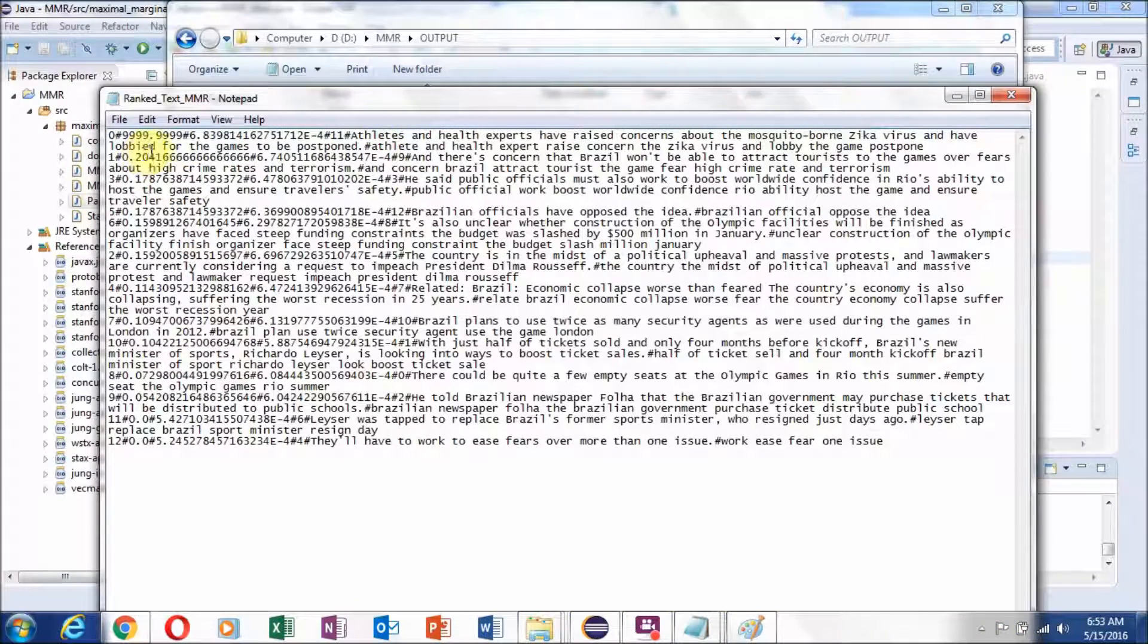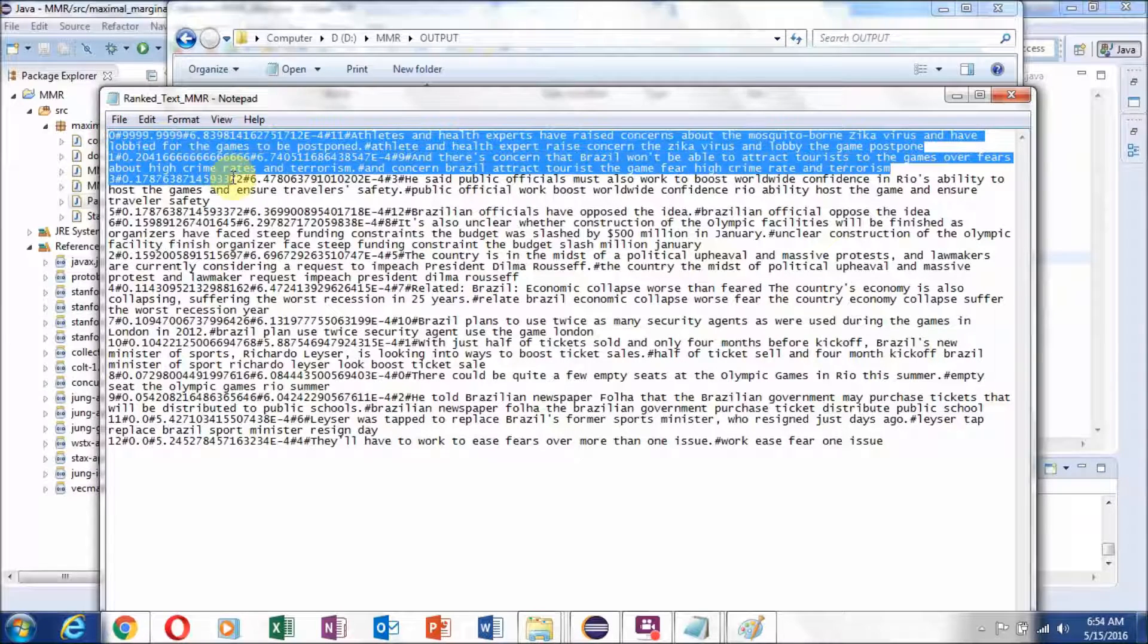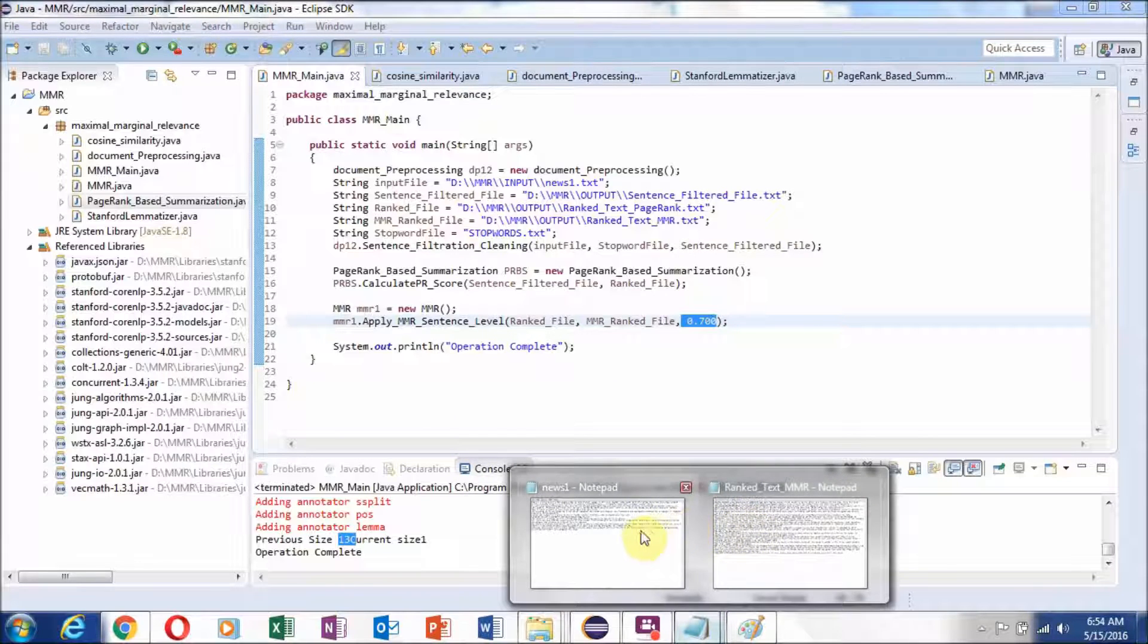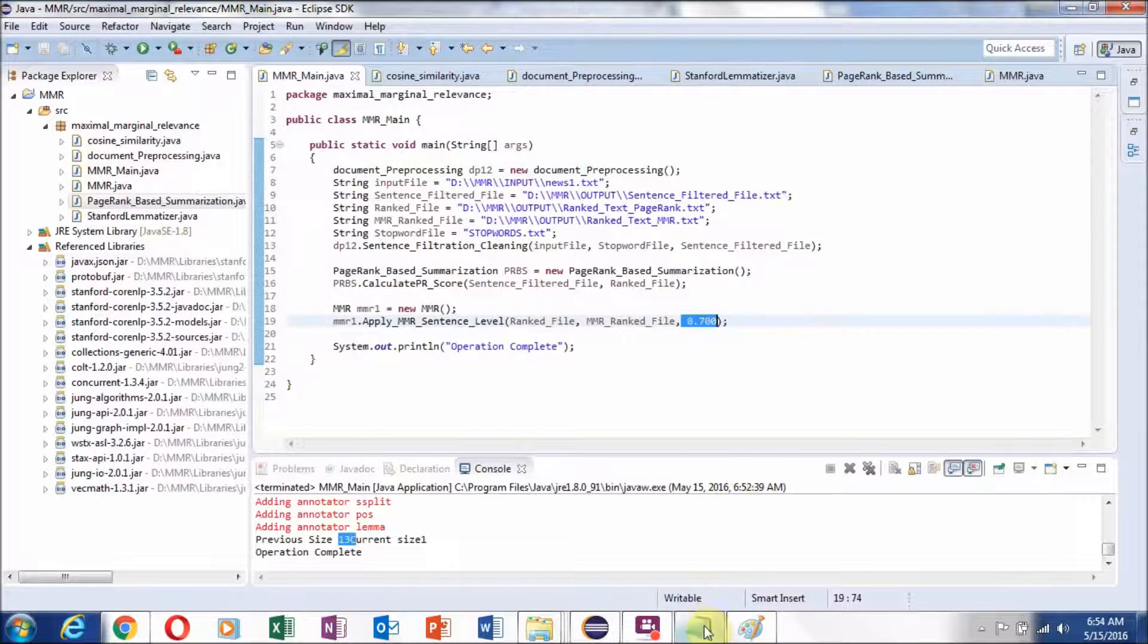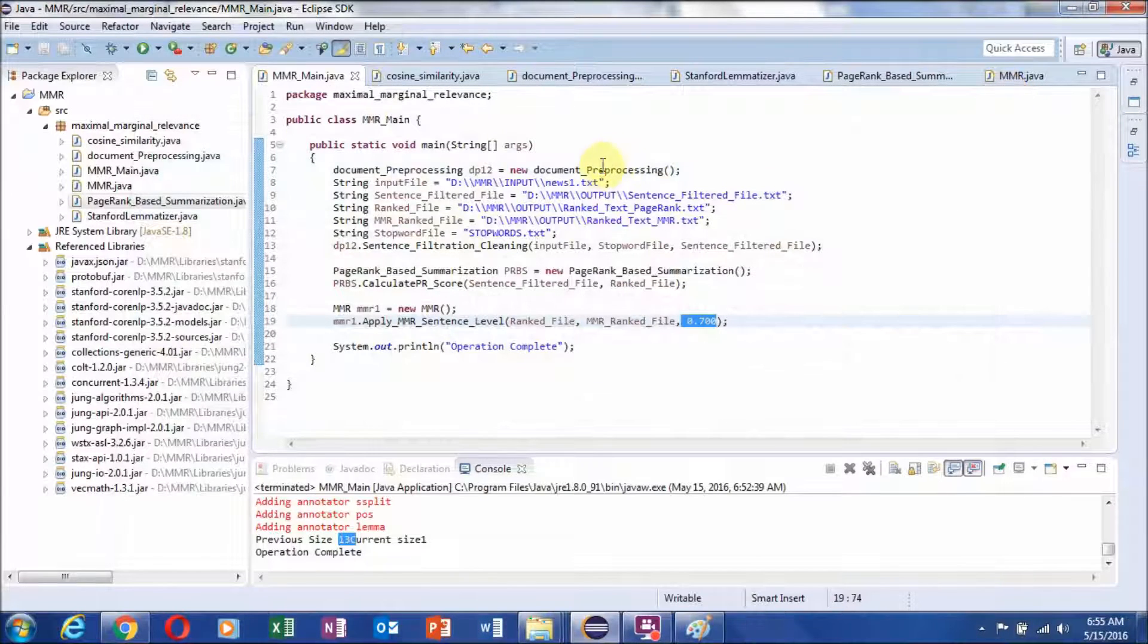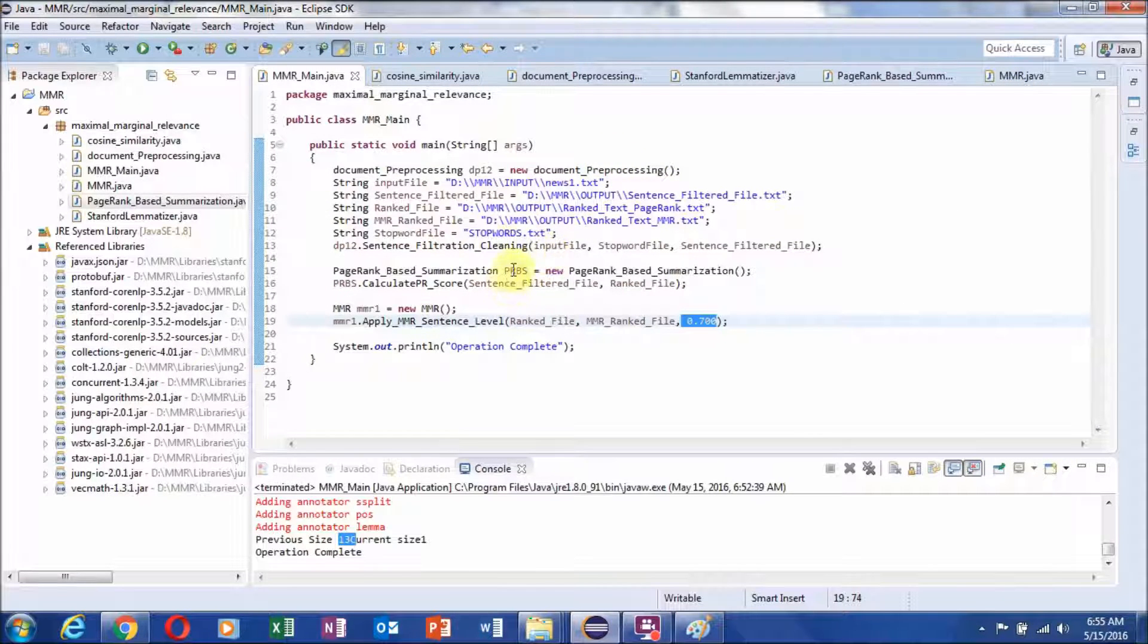But if you consider this MMR based ranking, then you can find that some highest PageRank based sentences, one more thing that I need to clear is that here we have taken the threshold value 0.7. So in top ranked sentences after applying maximum marginal relevance, you can see less information repetition with respect to simple PageRank scheme. For example, suppose you are working on multiple document summarization, where documents may contain sentences related to same topics, then this scheme will be more useful.